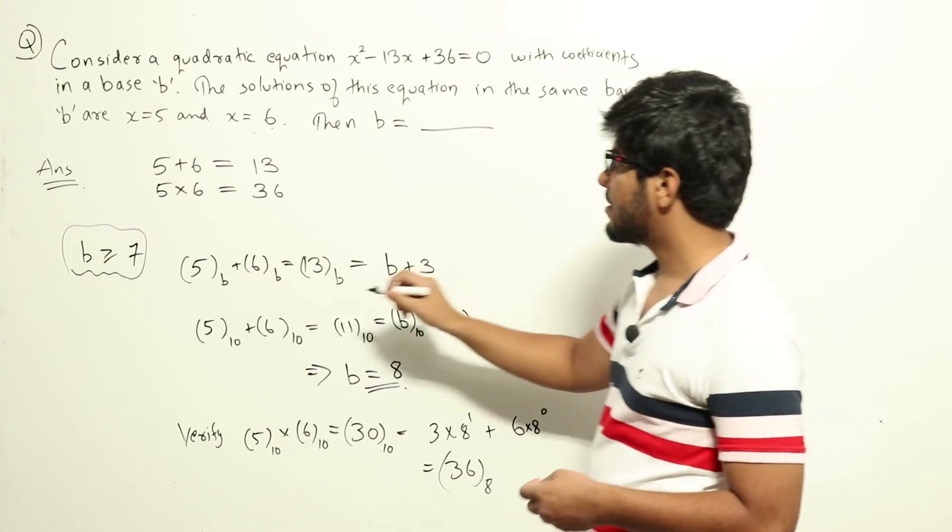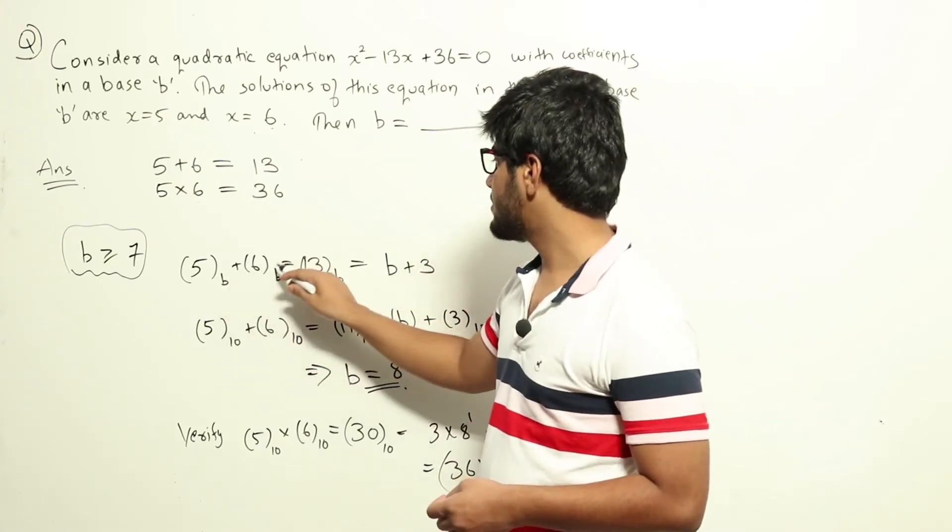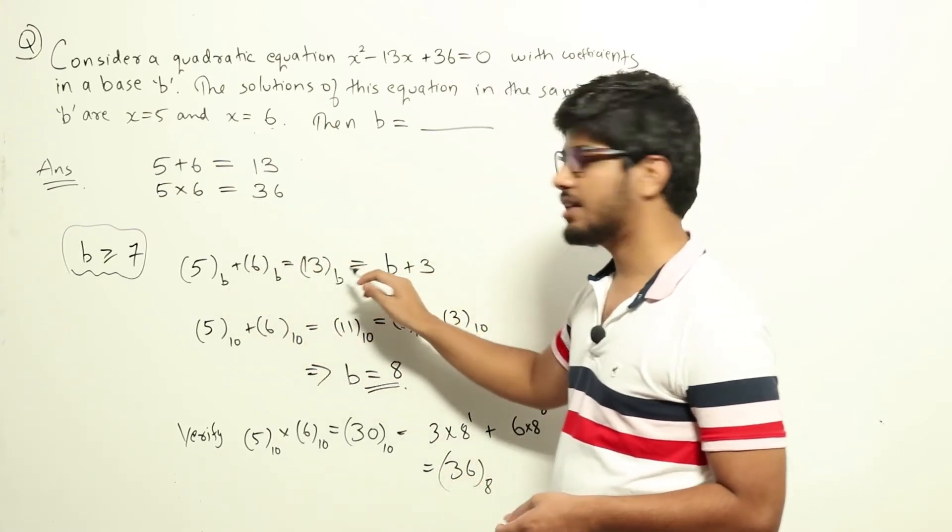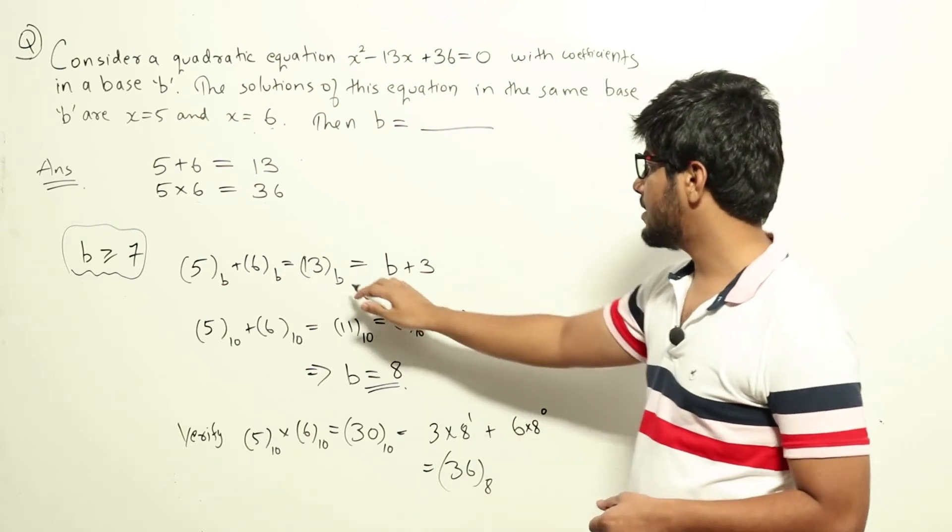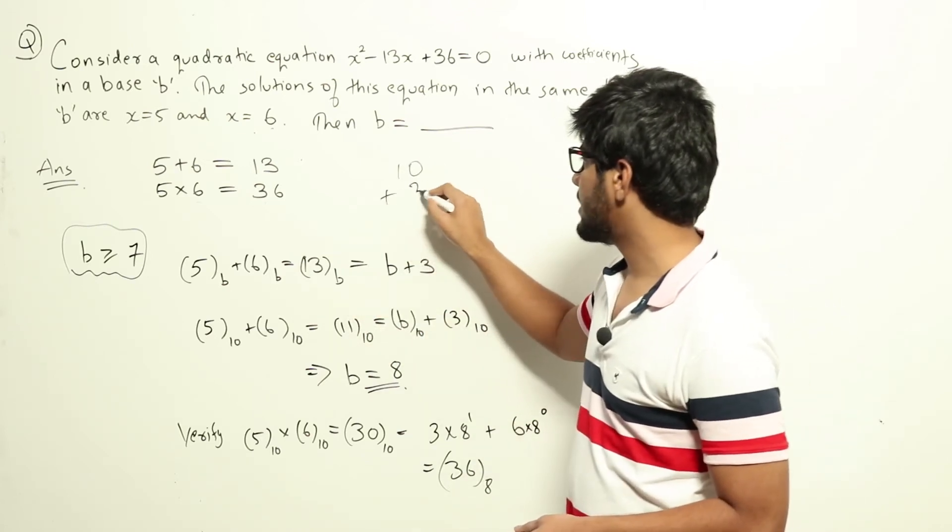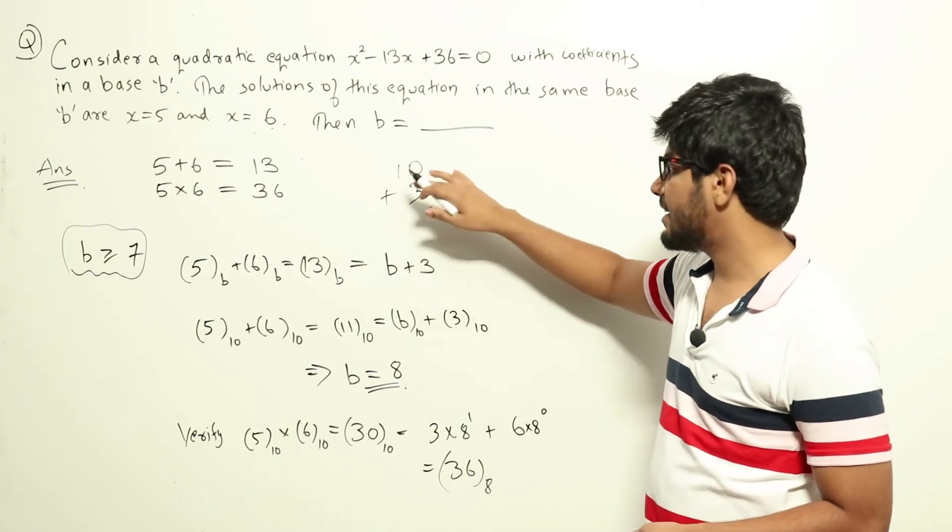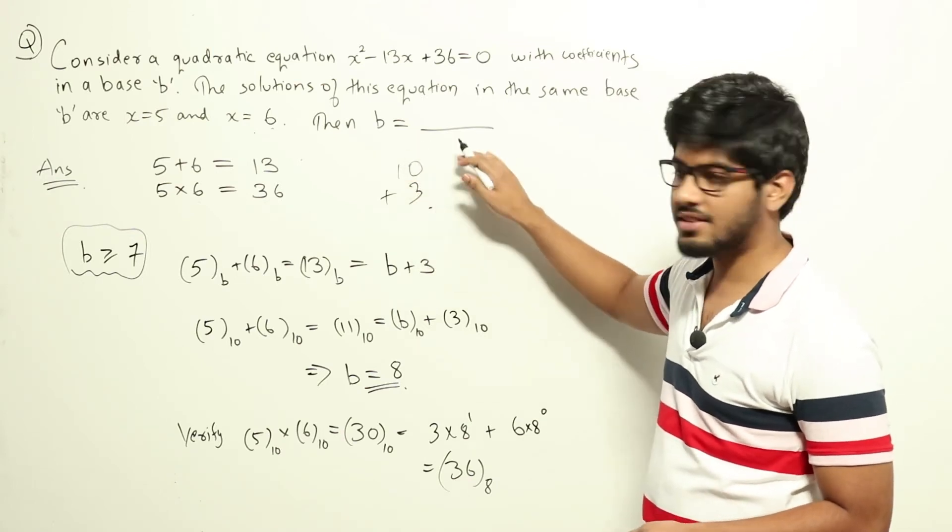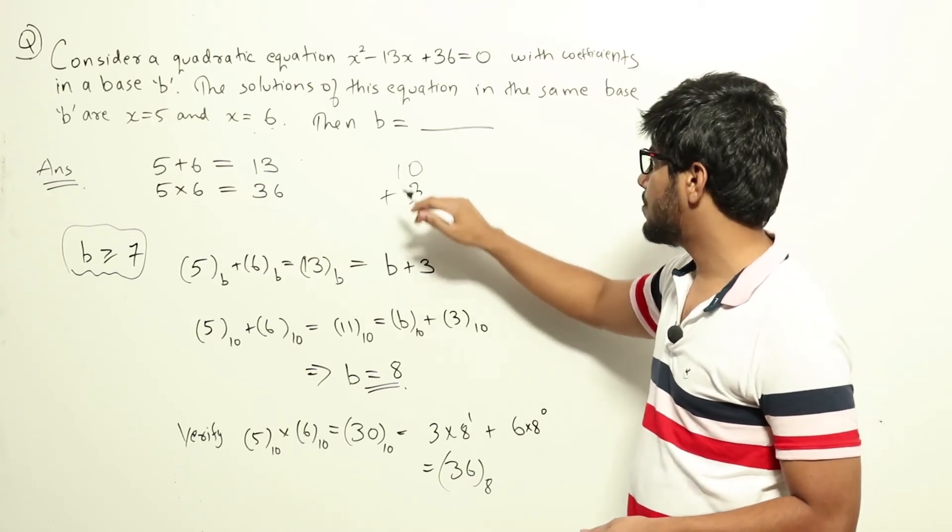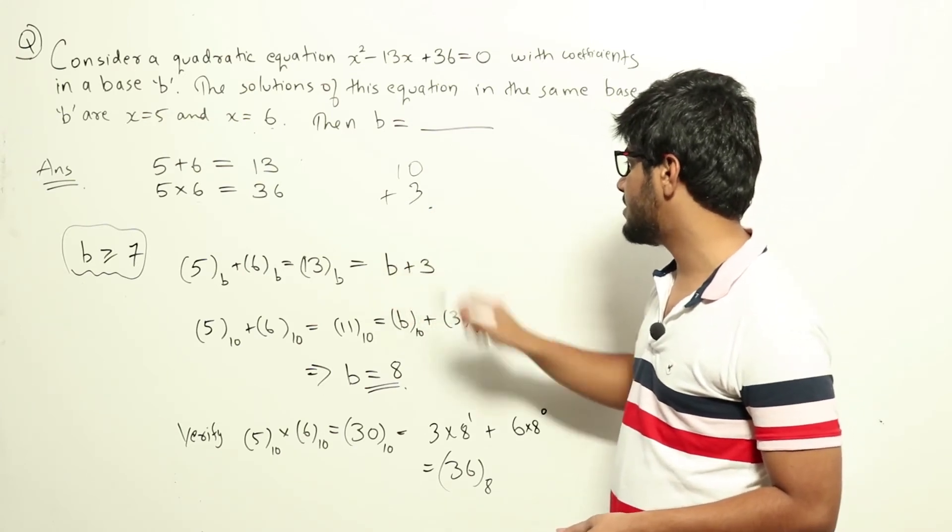So in base B, 5 plus 6 in base B will be equal to 13 in base B. Now 13 in base B we can rewrite as 10 plus 3. Now 10 is not ten here. In base B, 10 will be B. So we can rewrite it again as B plus 3.